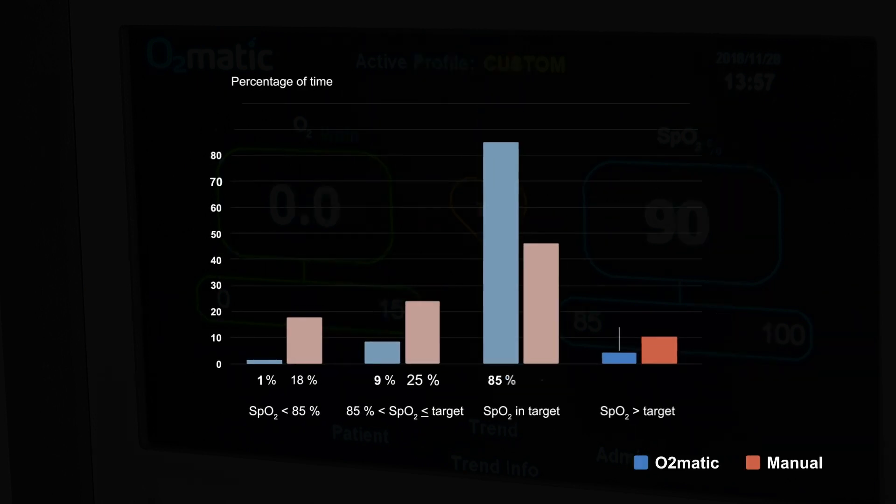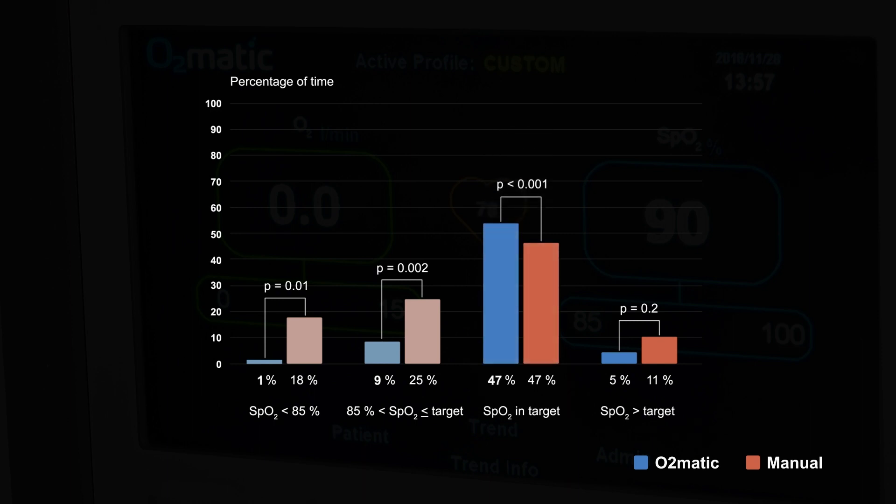The results of the study showed that O2matic maintained the oxygen saturation in the prescribed interval 85 percent of the time, and manual control only kept the saturation in the right interval for 47 percent of the time. Time with severe hypoxemia, defined as saturation below 85 percent, was markedly reduced with O2matic from 18 to 1 percent, and time with moderate hypoxemia was reduced from 25 to 9 percent.